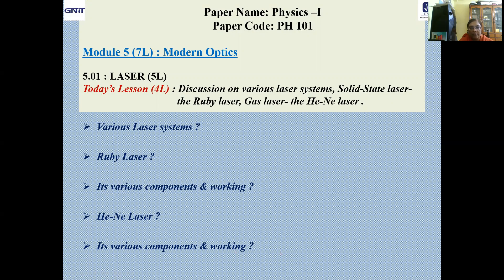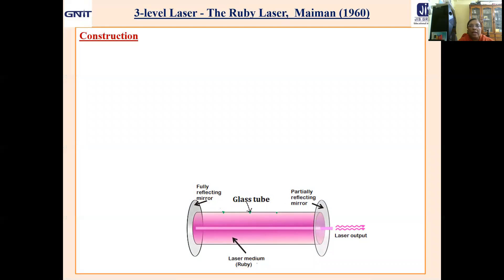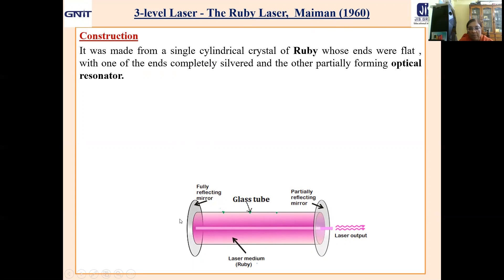Let us start today's session. Ruby laser is actually the first laser fabricated successfully by Maiman and co-workers, and it is a three-level solid-state laser. Construction-wise, it is made from a single cylindrical crystal of ruby rod whose ends are flat, with one end completely silvered and the other partially silvered, forming the optical resonator or resonant cavity.